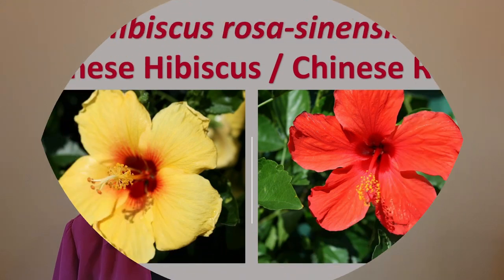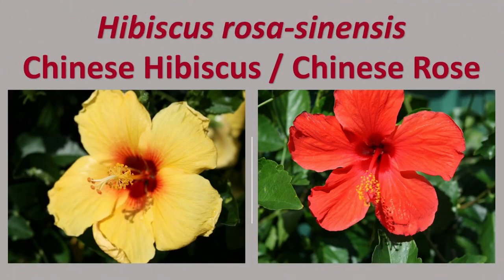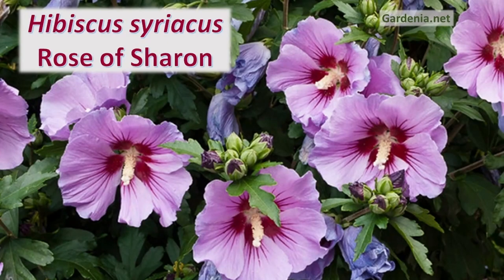The genus hibiscus includes numerous species, and two in particular are very well known and cultivated as ornamentals throughout the world: the beautiful tropical Hibiscus rosa-sinensis, an Asian plant with numerous common names including Chinese hibiscus and hibiscus rose, and Hibiscus syriacus, also known as Rose of Sharon. Even though named syriacus, Rose of Sharon is also native to South Central and Southeast China.